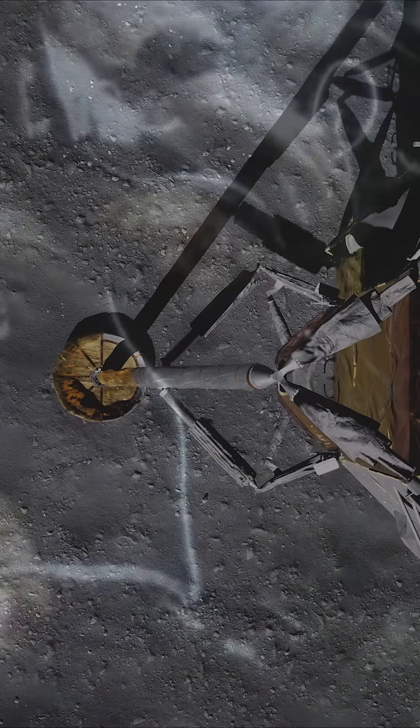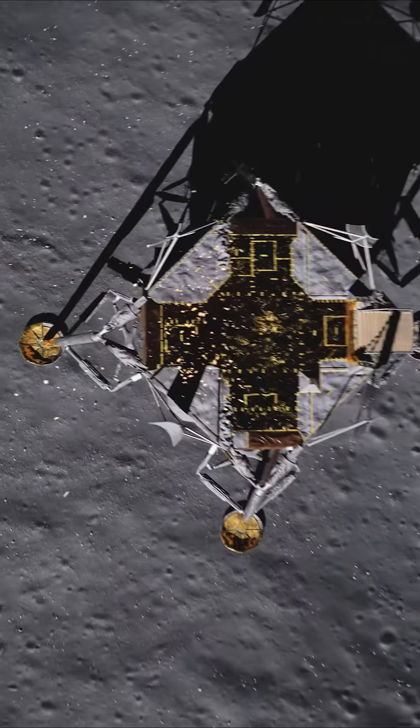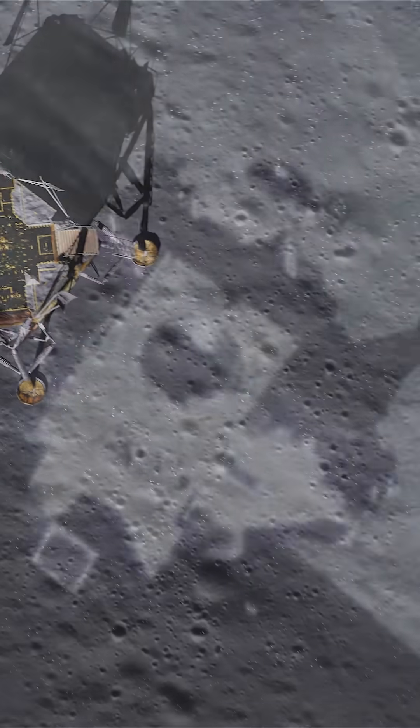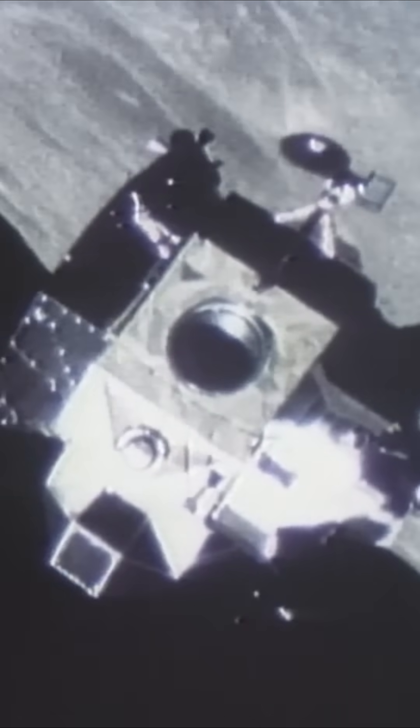When it was time to leave, the Apollo 11 astronauts Armstrong and Aldrin climbed back into the Eagle. The upper stage ignited, blasting them off the surface and back toward orbit, where Michael Collins waited above.